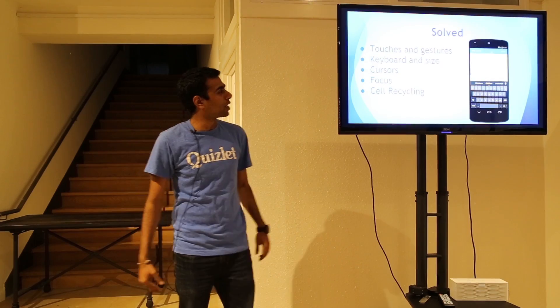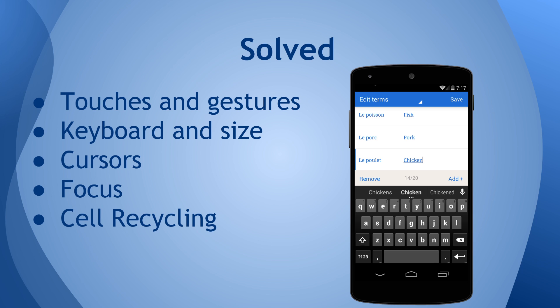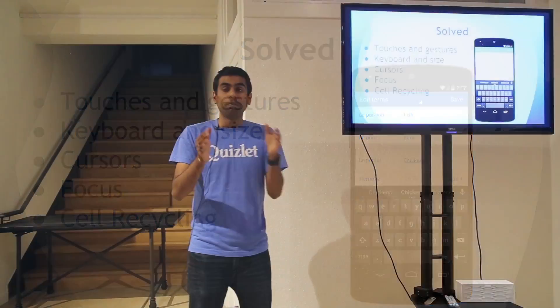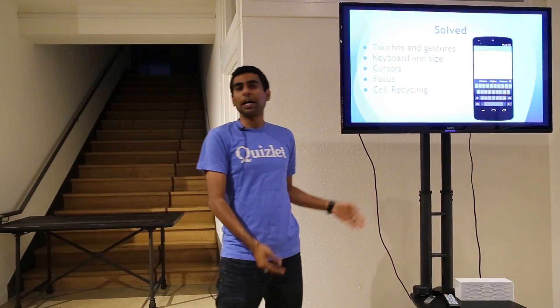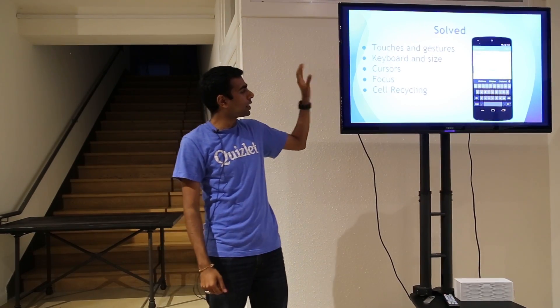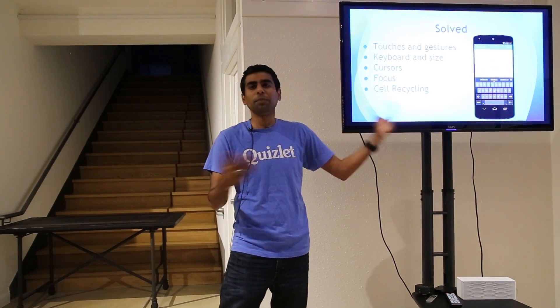Just to go over again what we talked about: touches and gestures — you want to do a lot of things, pick the ones you need most, figure out where the focus needs to go at what time. Keyboards and sizes — if you're in a ListView with an adapter, don't redraw the cells and things that you don't need to redraw, only redraw things you actually need to redraw. And finally, with cursors, tell it to do exactly what you think it should do: if you need to remove it, tell it to remove itself; if you want to add it, tell it to remove itself and then add itself. We also touched on focus and cell recycling to give a broad picture of what we did to make this seemingly simple feature actually work at the UI level.